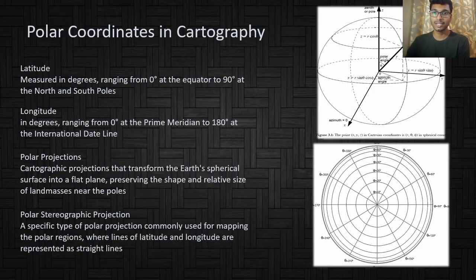The second application is in cartography. Latitude is measured in degrees, ranging from 0 degrees at the equator to 90 degrees at the north and south poles. Longitude is measured in degrees, ranging from 0 degrees at the prime meridian to 180 degrees at the international dateline.